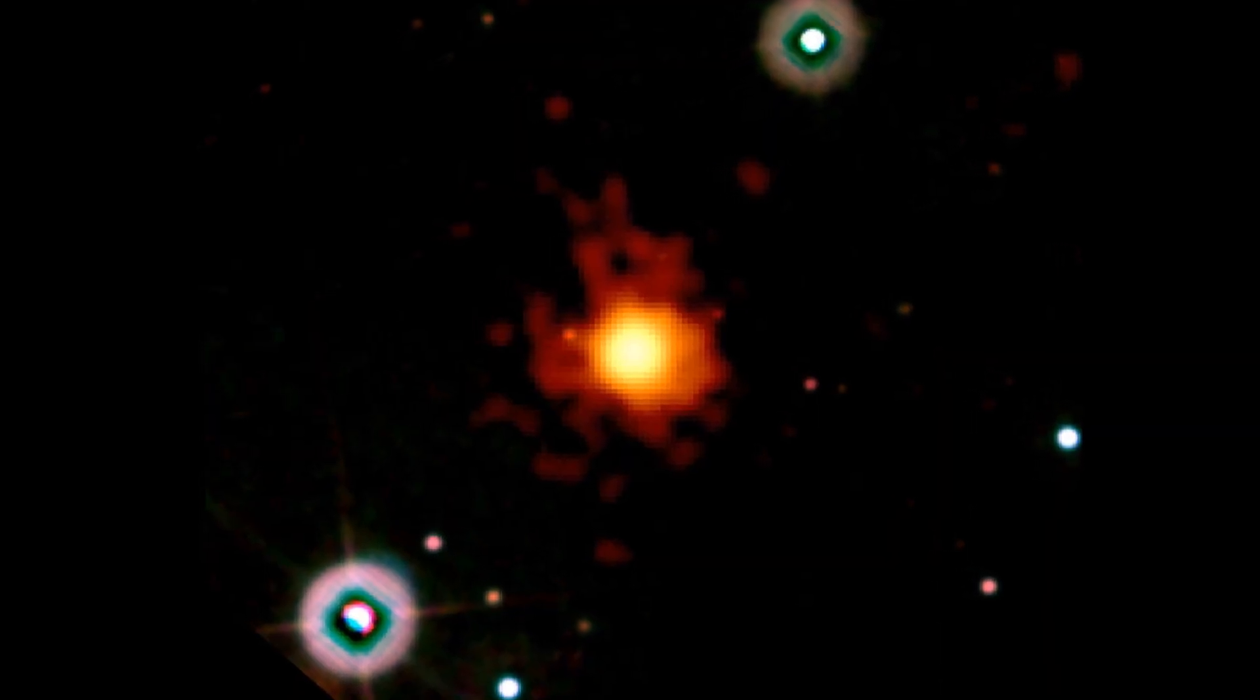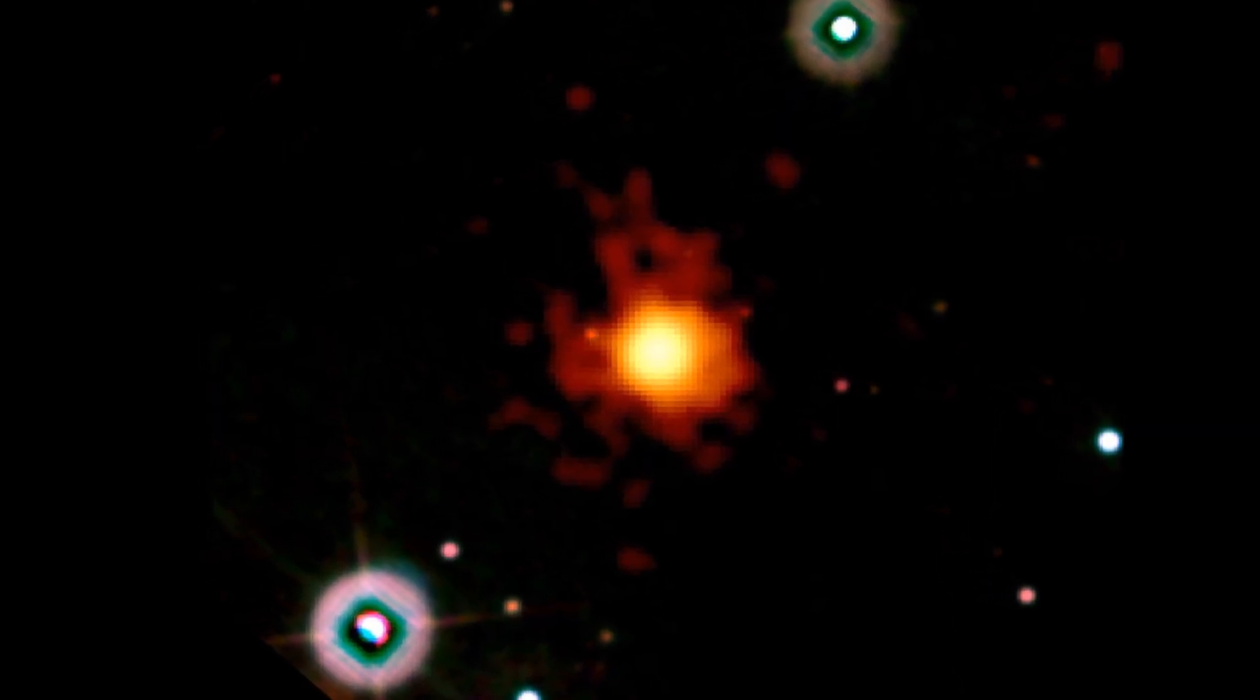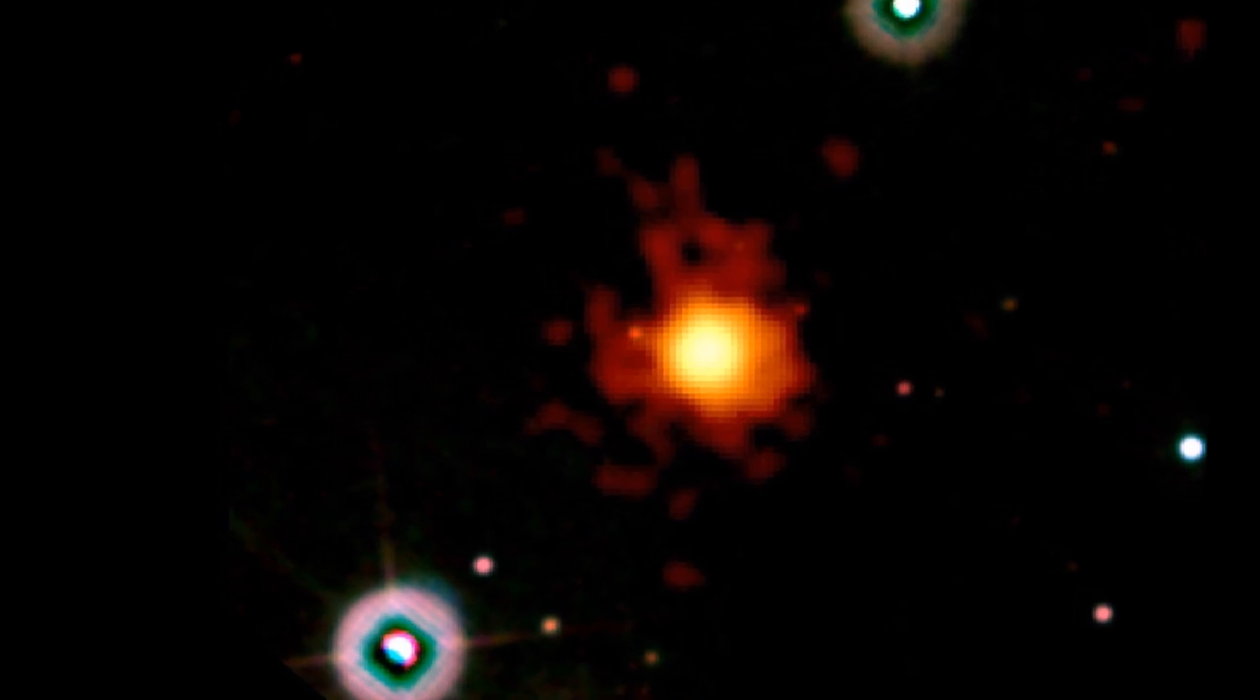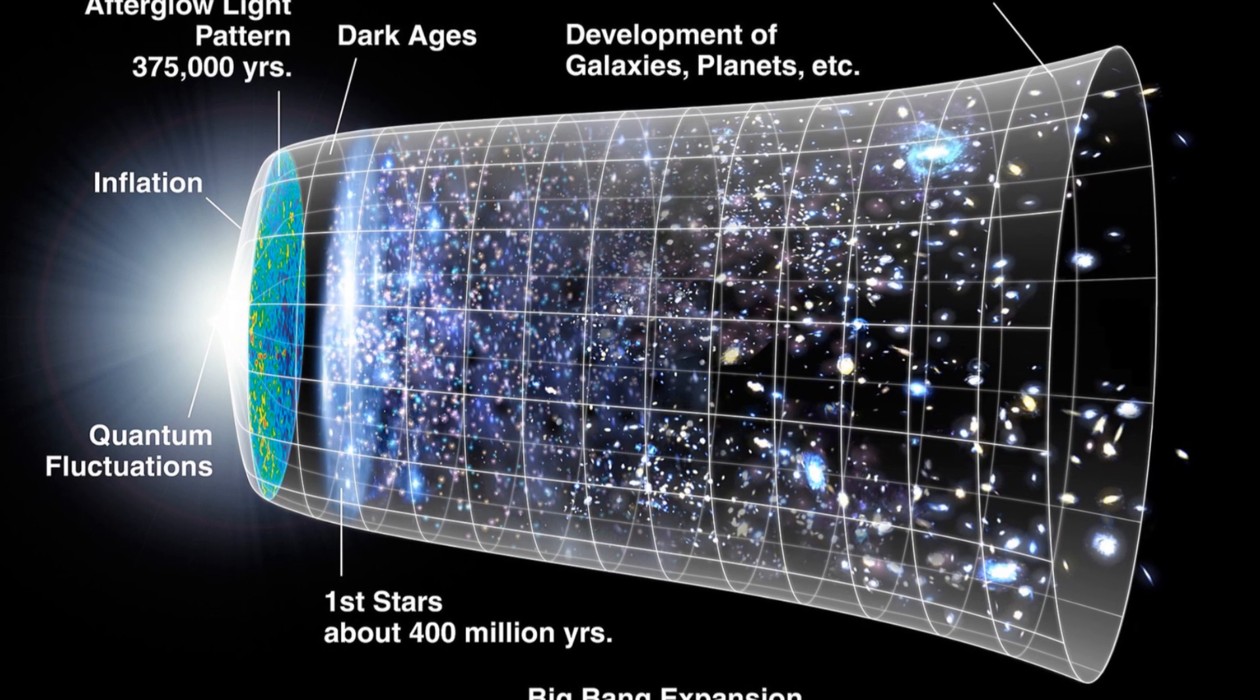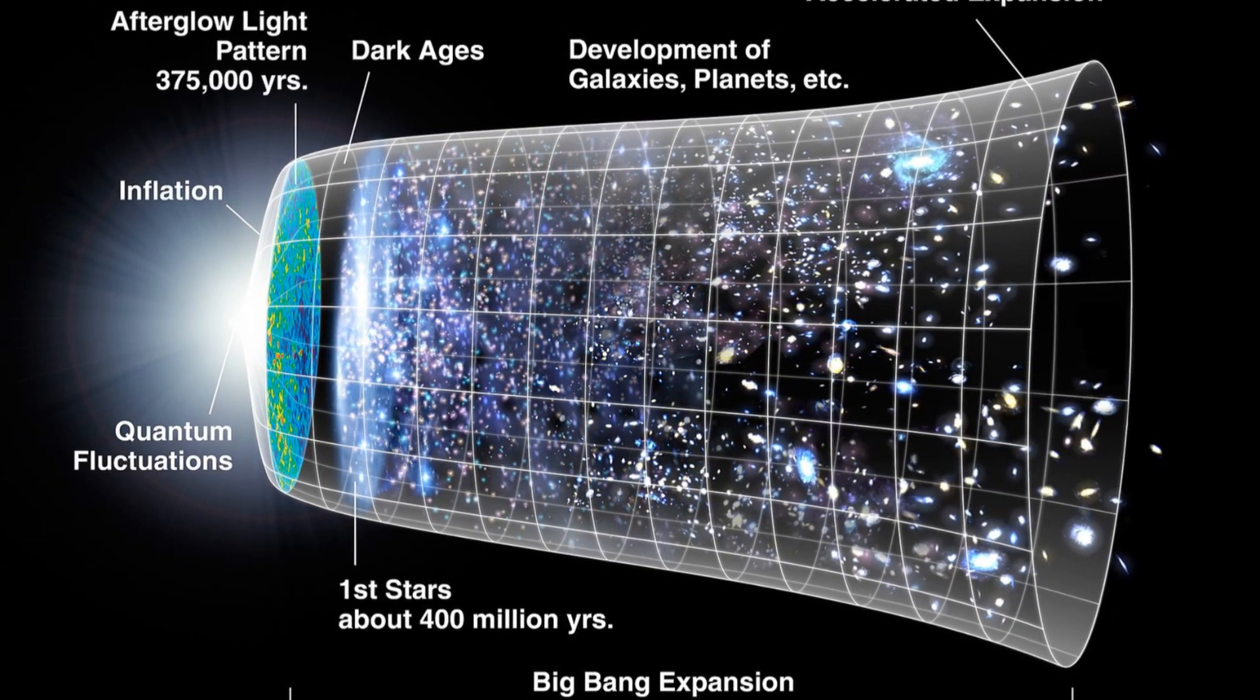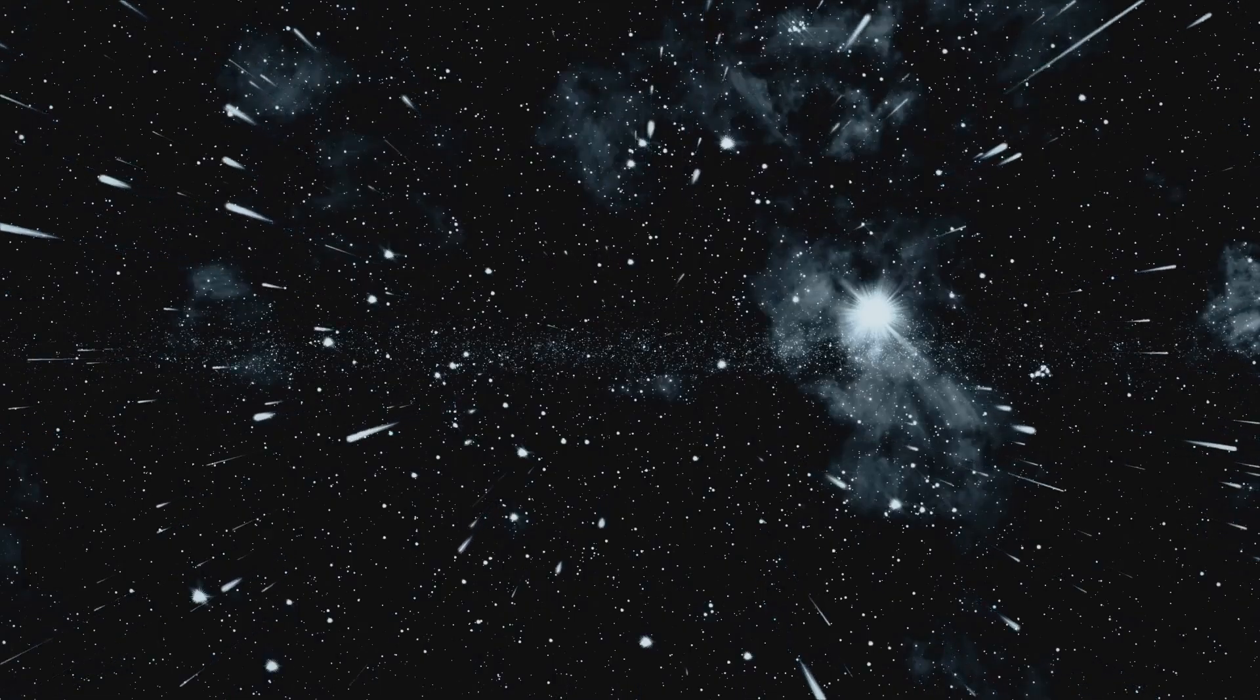For example, GRB 090423, one of the most distant gamma-ray bursts ever observed, took place roughly 13 billion light-years away. This event was so far away that the light from it began its journey when the universe was only about 630 million years old, providing a glimpse into the universe's early years.